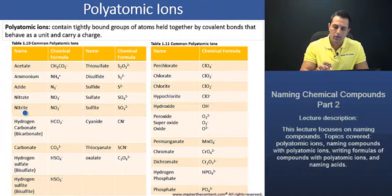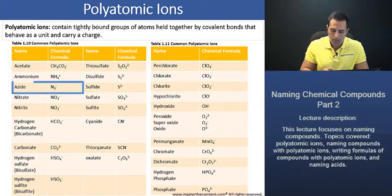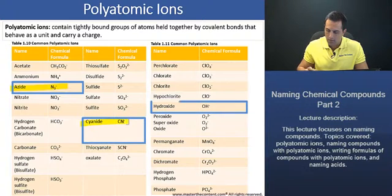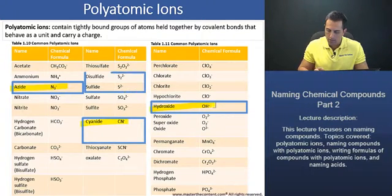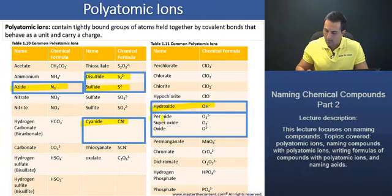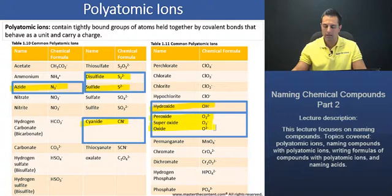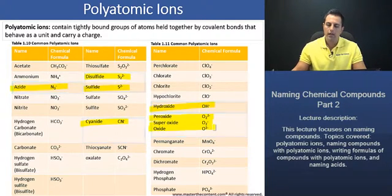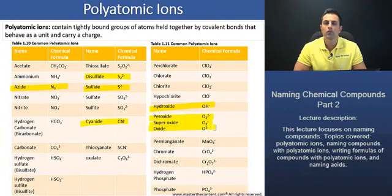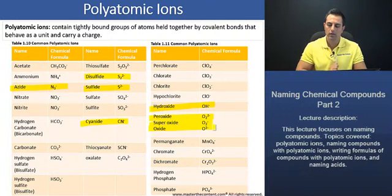Also, only azide, cyanide, hydroxide, as well as the sulfide and oxygen anions have an IDE ending, as we see here. And most polyatomic ions form oxoanions. Let's talk about oxoanions now on the next slide.